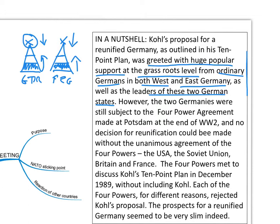However, the two Germanies were still subject to the four-power agreement made at the Potsdam Agreement of July 1945. That agreement stated that no decision was to be made about the future of Germany without agreement by the four winning powers of the war — the USA, the Soviet Union, Britain, and France. So no decision for unification could be made without unanimous agreement of the four powers.